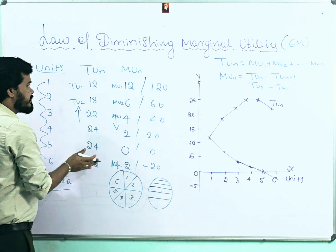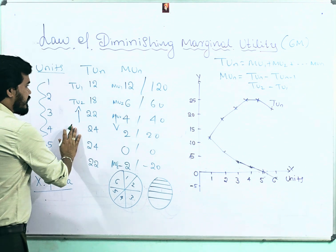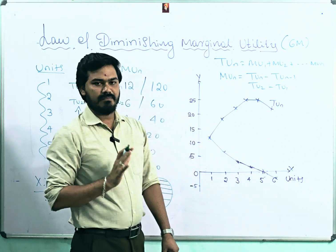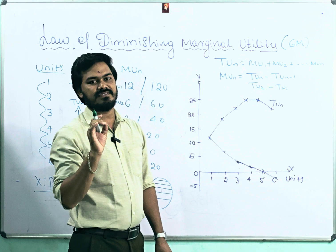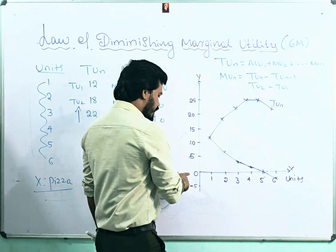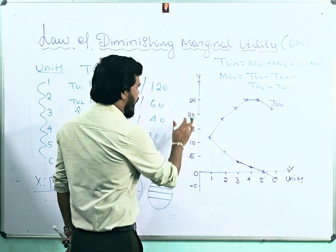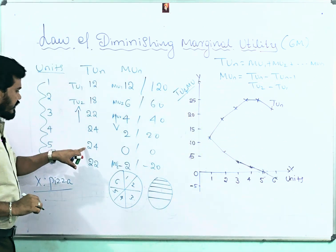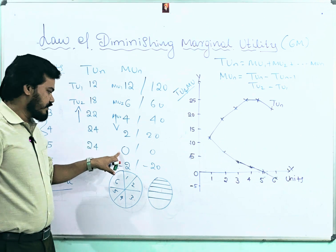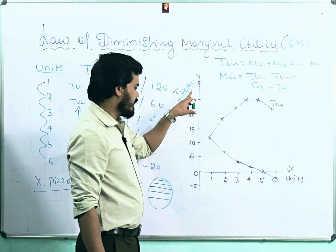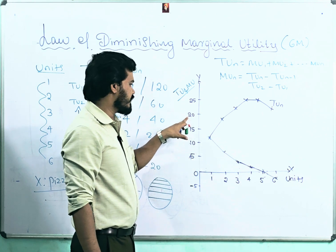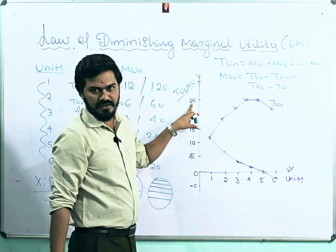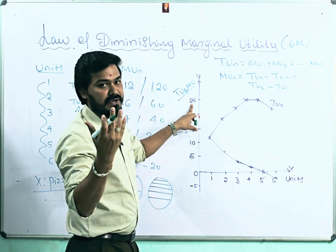The same table must be represented in a diagram. I have already drawn the diagram for time-saving purposes, but in upcoming live classes I will draw it step by step. On the OX axis we represent units; on the OY axis we represent total utility and marginal utility. The highest total utility here is 24, the lowest is 0, so I cover 0 to 25. The scale is: 0, 5, 10, 15, 20, 25. If you take a larger scale, the diagram will be smaller; a smaller scale gives a larger diagram.